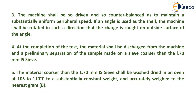The machine shall be driven and counterbalanced to maintain a substantially uniform peripheral speed. If an angle is used as the shelf, the machine shall be rotated such that the charge is caught on the outside surface of the angle. At completion of the test, the material shall be discharged from the machine and a preliminary separation made on a sieve coarser than the 1.70 mm IS sieve. The material coarser than the 1.70 mm IS sieve shall be washed, dried in an oven at 105 to 110°C to substantially constant weight, and accurately weighed to the nearest gram, that is D.